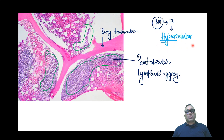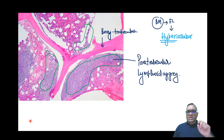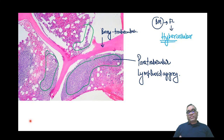Always remember: follicular lymphoma bone marrow will be hypercellular, with paratrabicular lymphoid aggregates around the bony trabeculae — this image is not given in Robbins. This topic came in the AIIMS or INICT exam. If you have any doubts, please post in the comment box. If you like this lecture, please subscribe to my YouTube channel and share it with your friends.